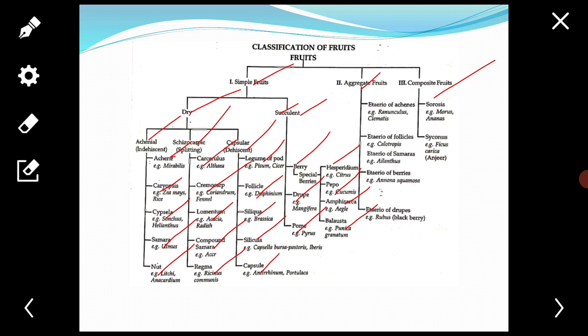Third is amphisarca. It is a special many-seeded superior berry found in Aegle, that is the bael. Woody covering is derived from epicarp, mesocarp and endocarp. Placenta form the edible pulp, enclosing the seeds. Seed coats are also mucilaginous. Example: Aegle.